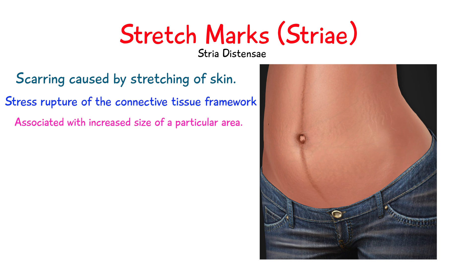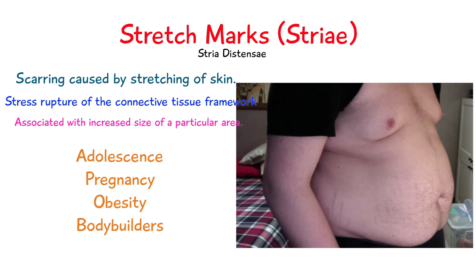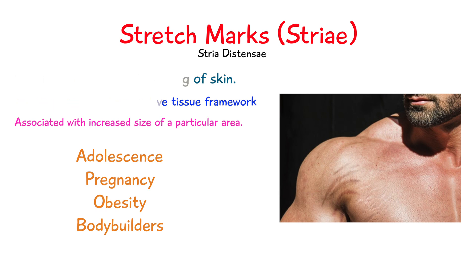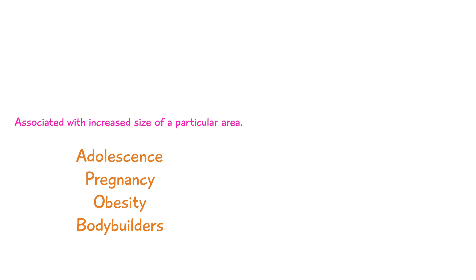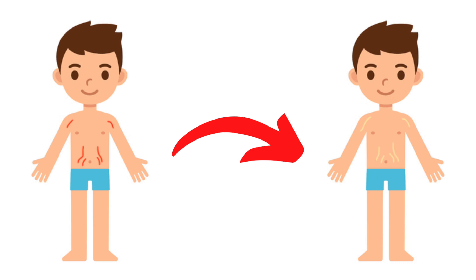Stretch marks are associated with a rapid increase in size of a particular region — common in adolescence, common over the abdomen during pregnancy, with increased fat deposits, and in bodybuilders where they particularly occur around the shoulders. Initially they start out as fairly red but become less conspicuous over time.